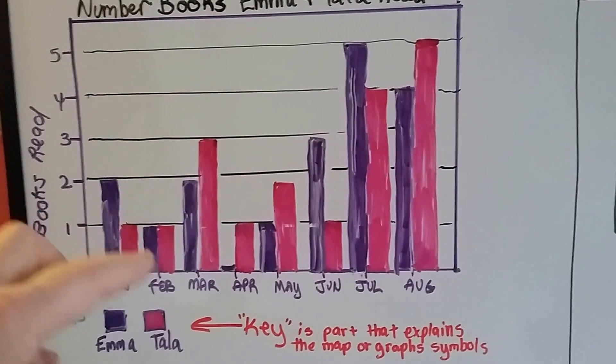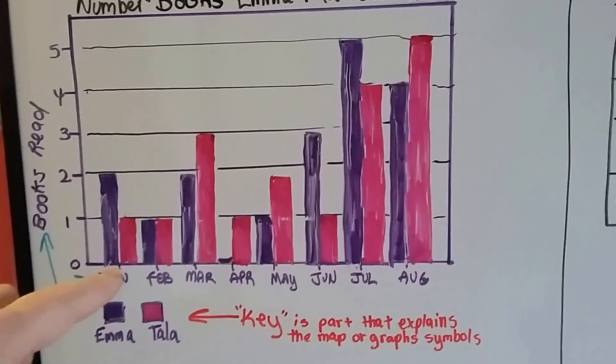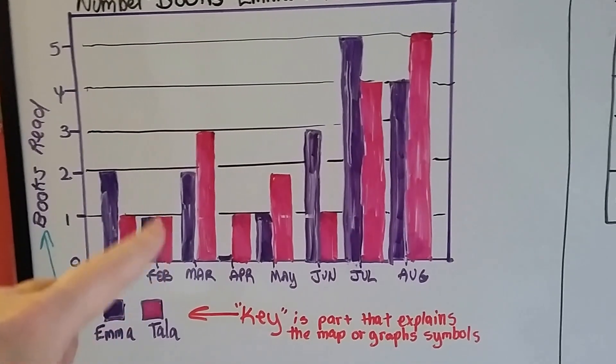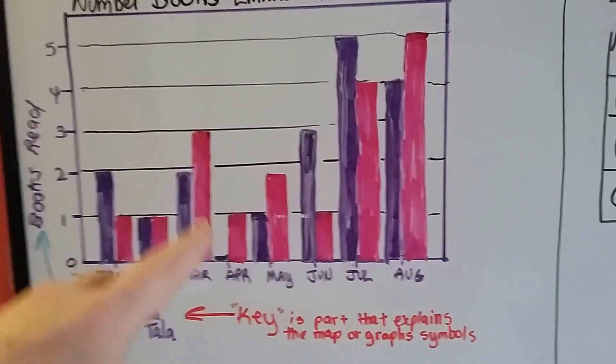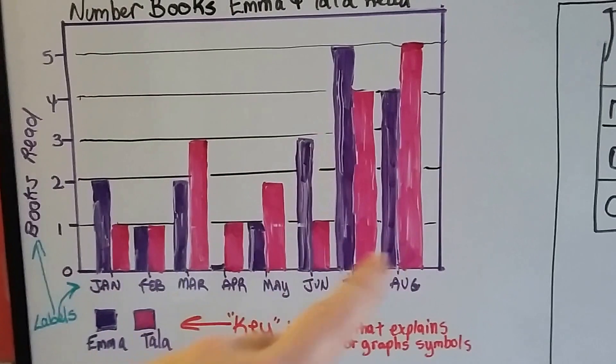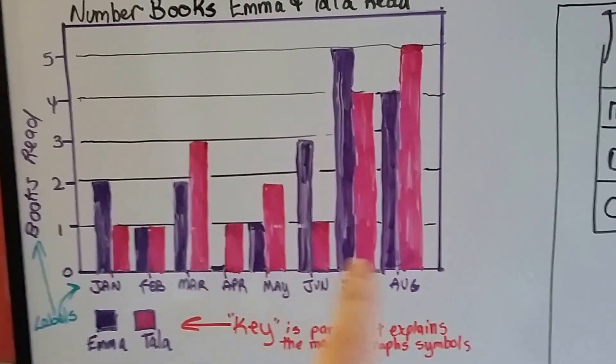And each month they filled it out. January, Emma was two, Tala was one. In February they both read one. In March, Emma read two and Tala read three. And we can easily compare and see who read more or less.